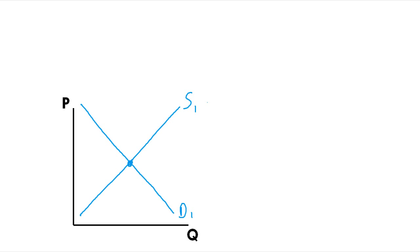We've drawn everything with the one subscript because we know that we're going to draw D2 and S2, which is going to give us an E2, a P2, and a Q2. And I'm going to make three copies of this graph.